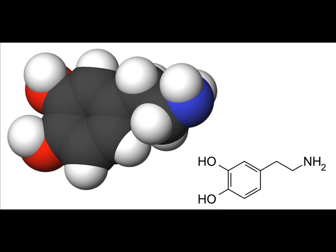Dopamine is produced in several areas of the brain, including the substantia nigra and the ventral tegmental area. Dopamine is also a neurohormone released by the hypothalamus. Its main function as a hormone is to inhibit the release of prolactin from the anterior lobe of the pituitary.